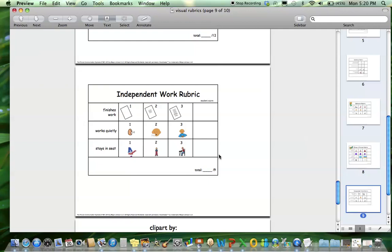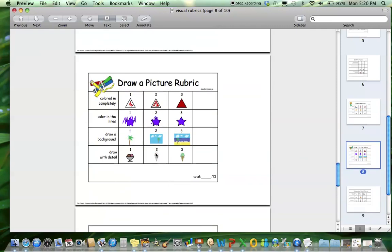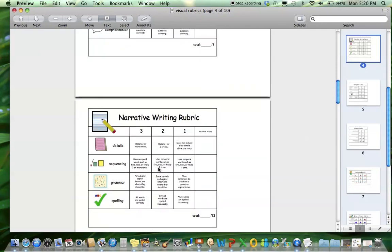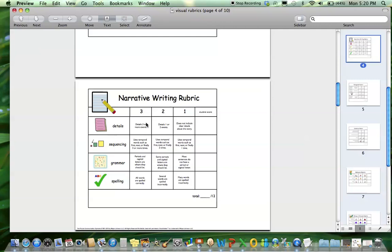I love these rubrics because sometimes it's so black or white. Either you did or you didn't. But I want to show my kids that in between. Yes, maybe you did finish your work, but you were talking while you were doing it and you were walking around. Or when you were writing your narrative, you didn't get 100% because you didn't have enough details or your spelling wasn't correct.